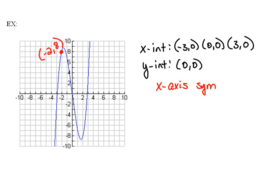If there is x-axis symmetry, then the x-coordinate stays the same, but the y-coordinate changes signs. So that means the point negative 2, negative 8, should also be on the graph. And it's not. So that means there is no x-axis symmetry here.